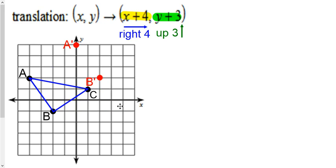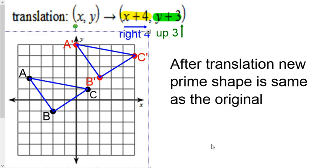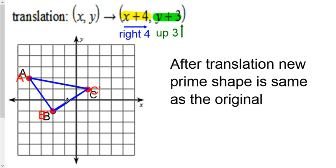Do the same for B. Do the same for C. Make the triangle. And guess what? This prime triangle, if we've translated it, it's the exact same size as before, just in a new location.